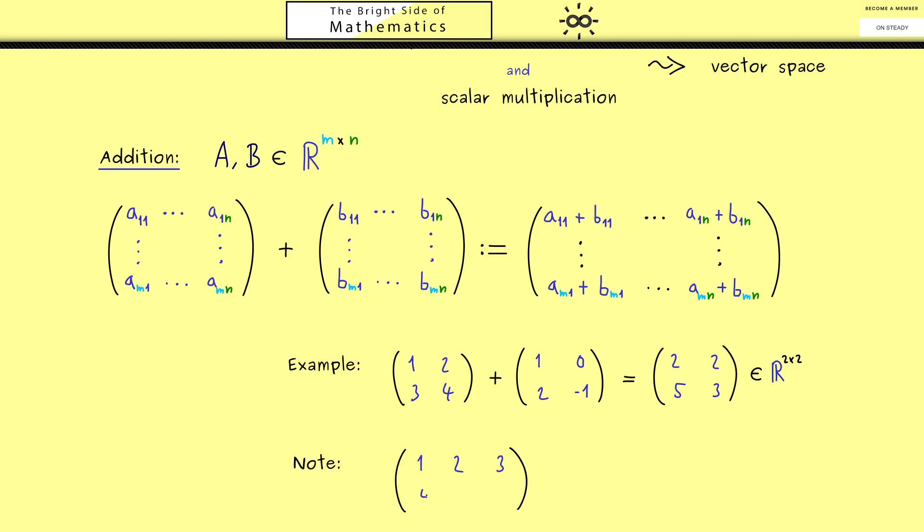So we have 6 entries and maybe we choose them as 1,2,3,4,5,6. Then it's not possible to add a 2x2 matrix like 7,8,9,10. So please keep that in mind, this is something we cannot do.